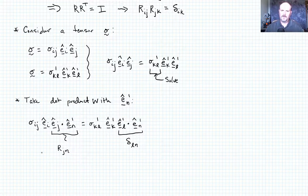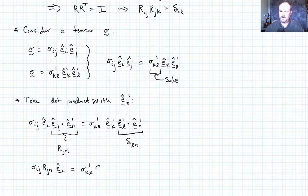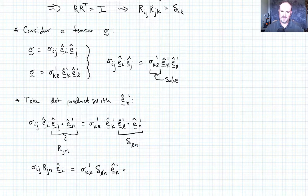Okay. So that looks like sigma_ij e_i hat e_j hat dotted with e_n prime hat is equal to sigma_kl prime e_k prime e_l prime dotted with e_n prime. And just like we wanted, that quantity becomes delta_ln. This quantity, following our previous definition, just looks like R_jn. Okay. So if I now clean this up a little bit and say that this now becomes sigma_ij R_jn e_i hat is equal to sigma_kl prime delta_ln times e_k prime.